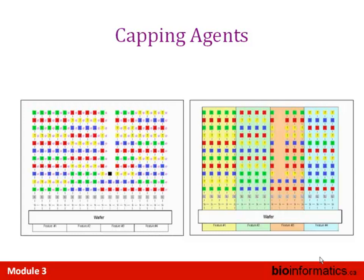If you've got a 100-base pair region, there's a pretty good chance it'll be different between two or three species, but a 25-base pair region can bind in multiple places. A single SNP is not such a big problem in a 100-base pair sequence, but a single SNP in a 25-base pair sequence is a problem. There are many trade-offs to consider in the technology — not just density but also sequence length and other characteristics.